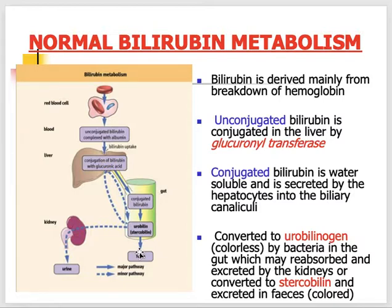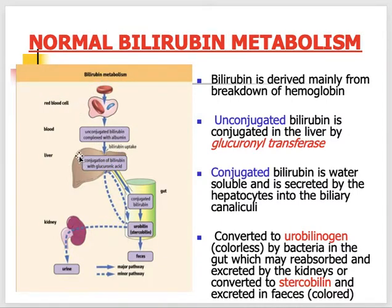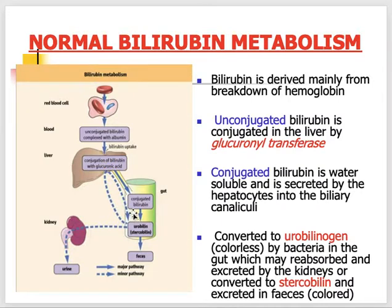When indirect (unconjugated) bilirubin in the blood is raised, it is insoluble and will not appear in the urine. There are three kinds of jaundice: pre-hepatic — when there is an abnormality before the liver; hepatic — when the abnormality is in the liver; and post-hepatic — when the abnormality is after the liver or after conjugation. In pre-hepatic jaundice, bilirubin is not found in the urine because it is not water-soluble, so urine color will be normal.